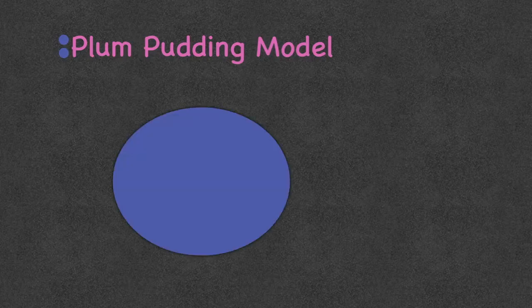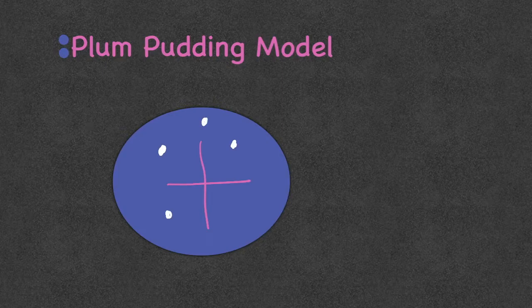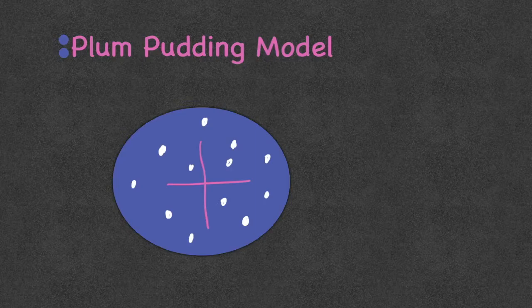J.J. Thompson thought the atom was this big sphere, and he said this sphere was positively charged. But then he said there are also these little particles — he called them corpuscles, we call them electrons — and they are scattered all throughout the sphere of positiveness. He said the atom kind of reminded him of his favorite dessert: plum pudding.